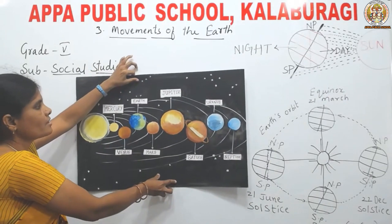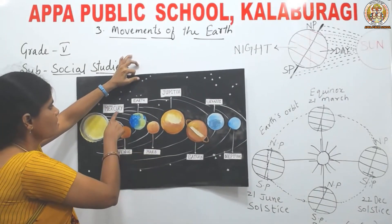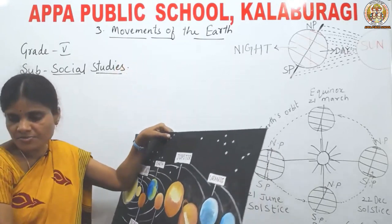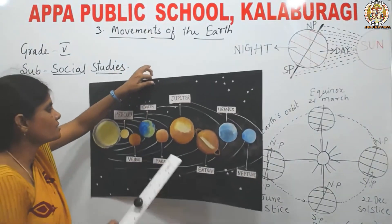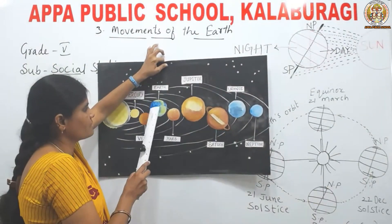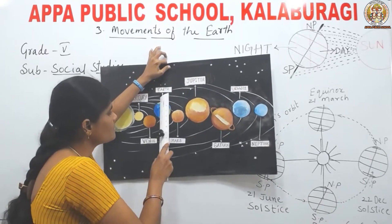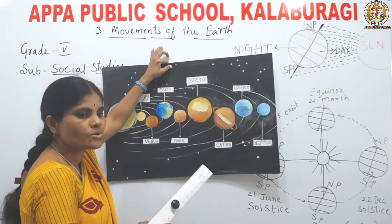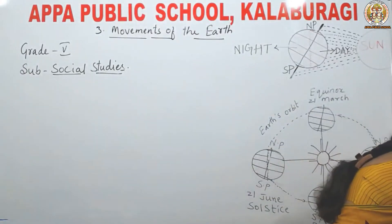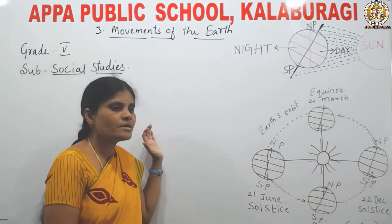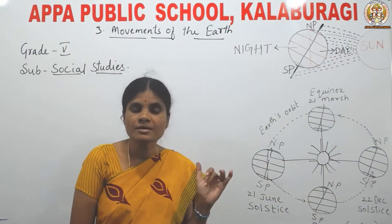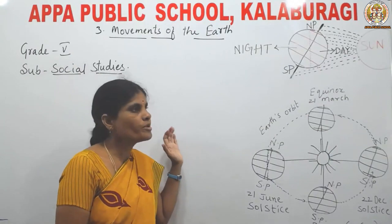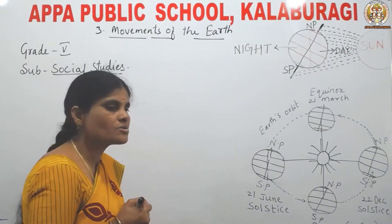These eight planets are revolving around the sun. That means the earth is also a planet, and the earth also revolves along with the other planets because it is one of the planets of the solar system. While revolving around the sun, the earth does one more thing — it rotates on its own axis. So the earth has got two movements.